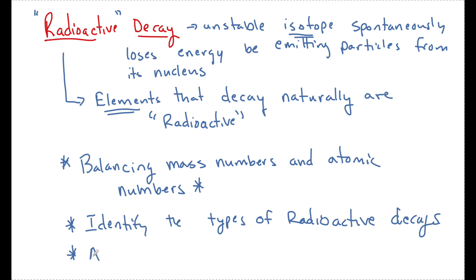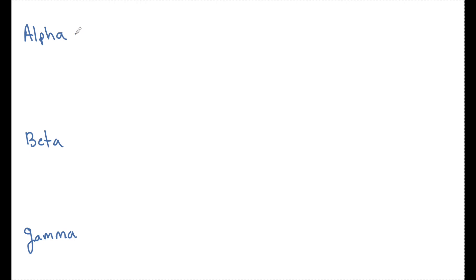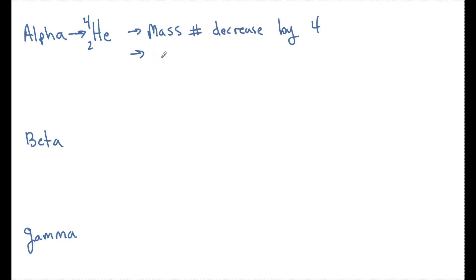We're going to look at identifying alpha, beta, and gamma when it comes to decay. An alpha particle is really just the nucleus of a helium atom — it has an atomic number of two and a mass number of four. So in an alpha decay, an alpha particle, also known as a helium nucleus, is going to be emitted. This will make the mass number decrease by four and it'll make the atomic number decrease by two.